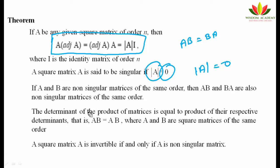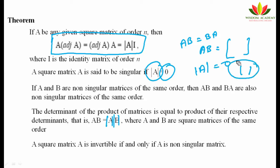Another theorem: the determinant of the product of matrices equals the product of the respective determinants, i.e., |AB| = |A| × |B|. Also, a square matrix A is invertible if and only if A is non-singular — meaning A inverse exists only when |A| ≠ 0.